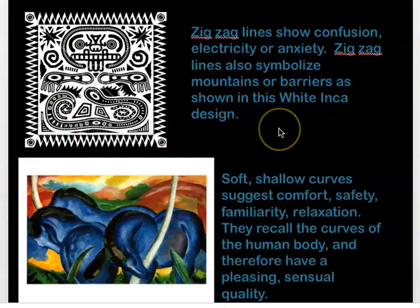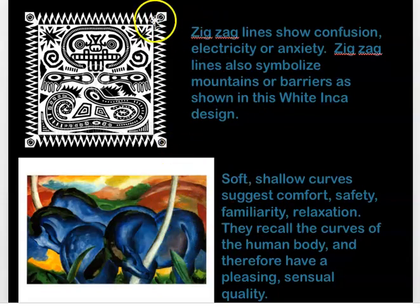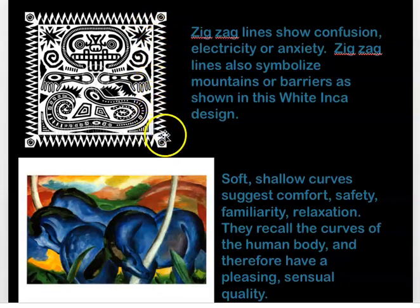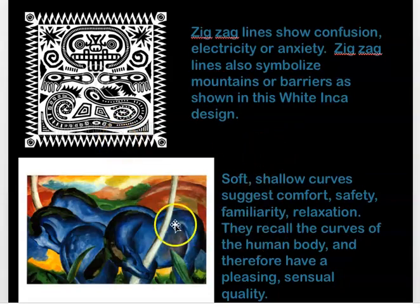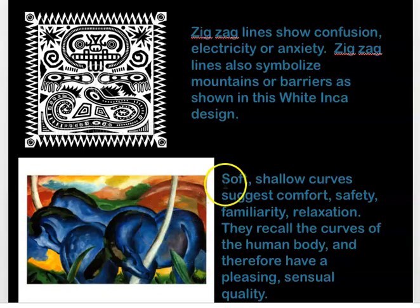Looking at two more types of lines: zigzag lines show confusion, anxiety, electricity — they even symbolize mountains. They give you a sense that something is happening. Lines have emotion too, as you see in this painting by Franz Marc, a German artist. The soft, shallow curves suggest comfort, safety, and relaxation. They're somewhat sensuous because they look like the curves of a human body.